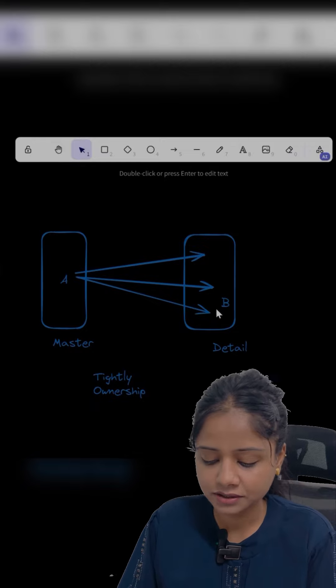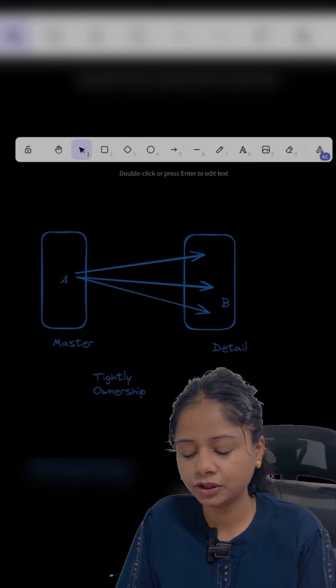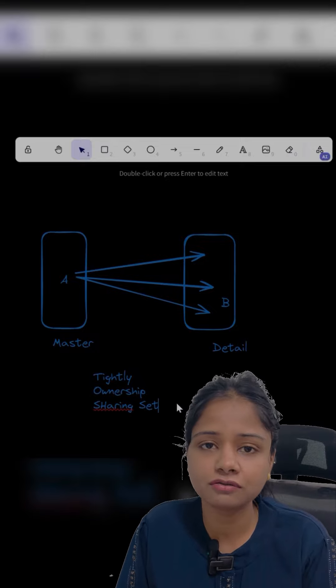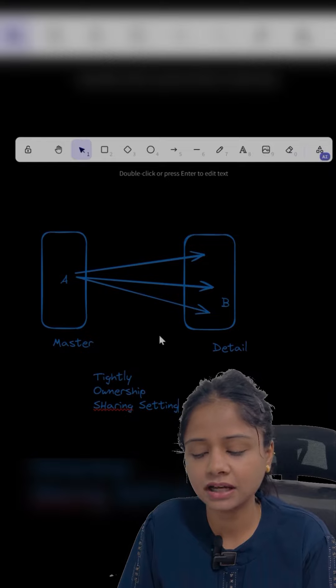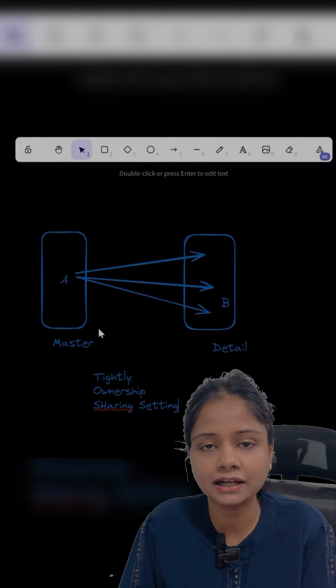Then next, sharing settings. In the sharing settings, whatever the OWD or the sharing rules you will set for Object A, that is the master, the same will apply to child object also, child records.